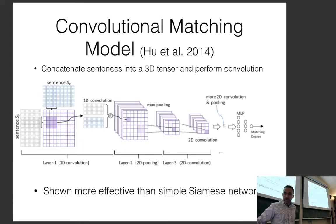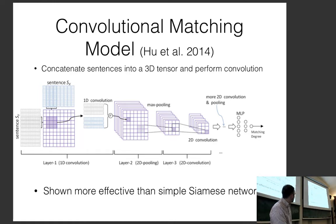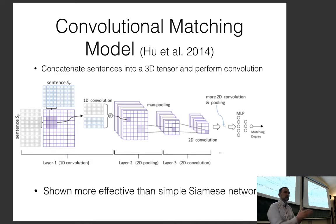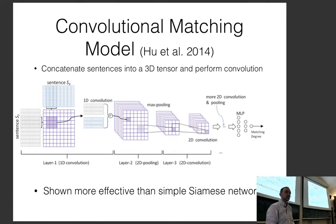If the sentence lengths are not equal, that's fine. You have a matrix where the rows are the length of sentence SY and the columns are the length of sentence SX. One of the nice things about convolution with pooling is that after pooling, you can reduce a variable-length matrix into a single vector. You could also use dynamic pooling, which takes the first, second, third, and fourth quarters of the matrix, reducing it to a 4x4 matrix for further processing.